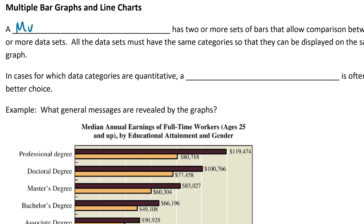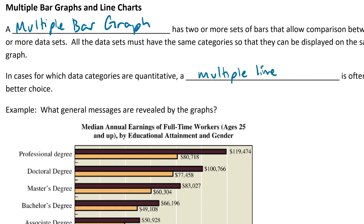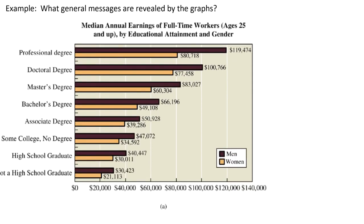A multiple bar graph has two or more sets of bars that allow comparison between two or more data sets. All the data sets must have the same categories so that they can be displayed on the same graph. In cases where data categories are quantitative, a multiple line chart is often a better choice.